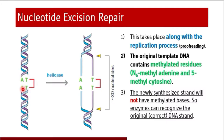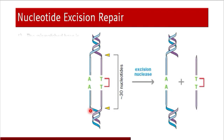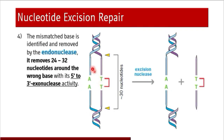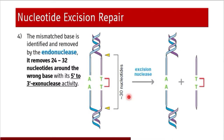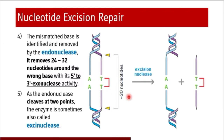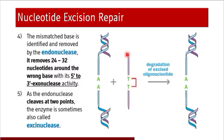The DNA repair system identifies the defect in the newly synthesized DNA. The helicase enzyme unwinds the DNA, the mismatch base is identified and removed by endonuclease. This endonuclease removes around 24 to 32 nucleotides around the wrong base — approximately 12 to 15 nucleotides upstream and 12 to 15 nucleotides downstream. This fragment is removed via 5' to 3' exonuclease activity, as the endonuclease cleaves at two points. The enzyme is sometimes called exynuclease, and this complete portion of around 32 nucleotides is degraded.